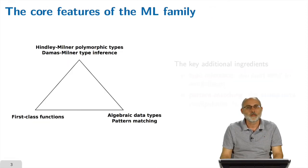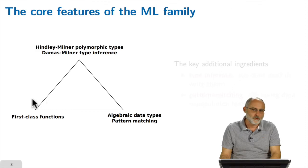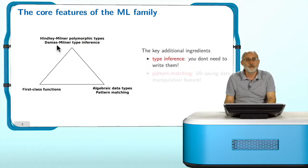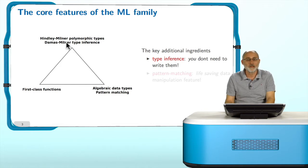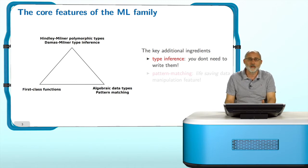What are the features of these languages in the ML family? Of course, they are functional programs, so you have first-class functions. But there are some key additional ingredients. One is type inference — this vertex of the triangle here. You have polymorphic types, which are very flexible and powerful types. Even more impressive is that types are present all along in the system to check the safety of your program, but you never need to write them. There is a fantastic type inference algorithm that actually writes them for you.